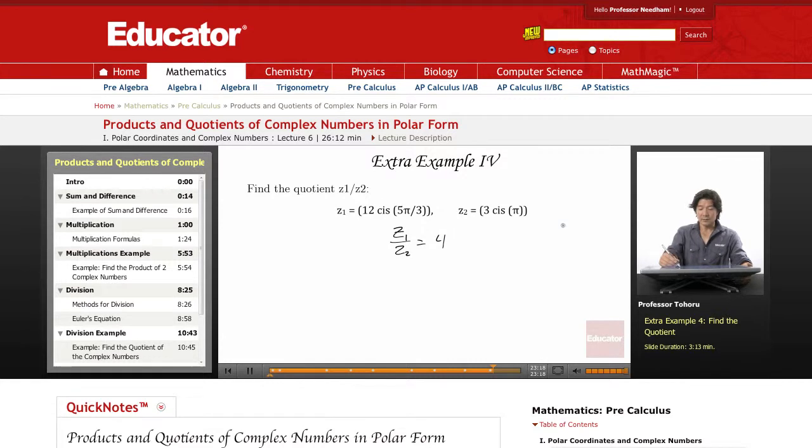Now we also know, let's do theta 1 minus theta 2, which becomes 5π/3 minus π, which we know gives us 2π/3.